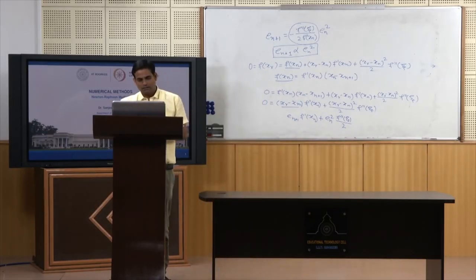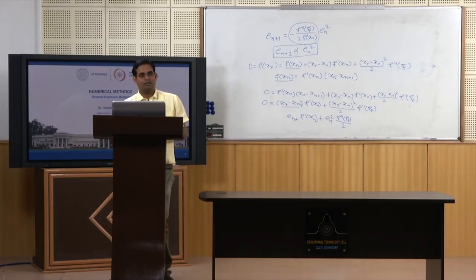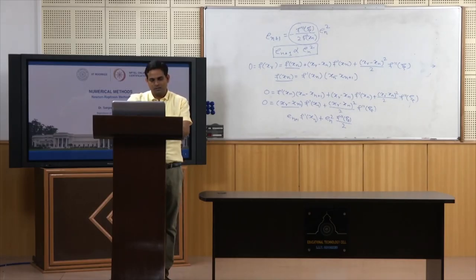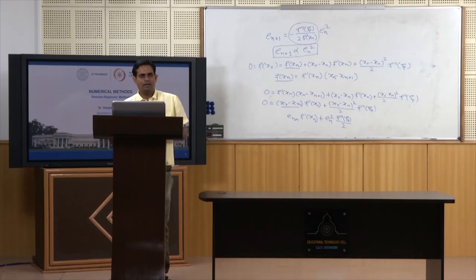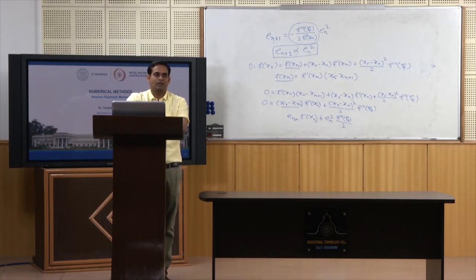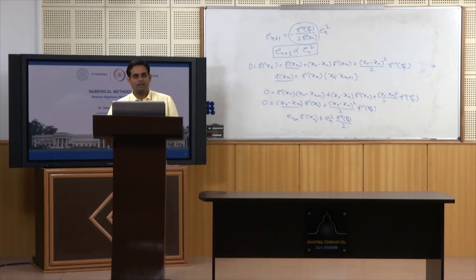In this lecture we have learned about the Newton-Raphson method. First we derived it using a geometric illustration, then using the Taylor series expansion of f(x). We solved two examples — one simple polynomial and one transcendental equation. Finally, we looked at the drawbacks of the method explained graphically and proved that the method has quadratic convergence. Thank you very much.